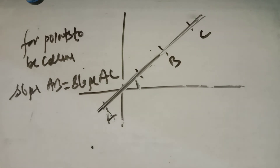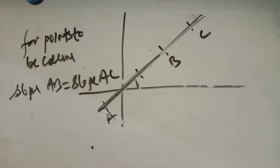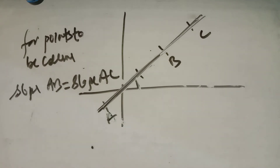These are the basics of coordinate geometry for class 11: slope of a line, conditions for parallel and perpendicular lines, angle between two lines, and collinearity — points are collinear if slope of AB equals slope of AC or BC. Now we start Exercise 10.1 of your NCERT book, question number 1.